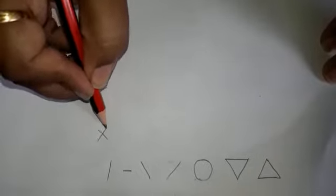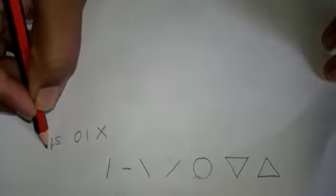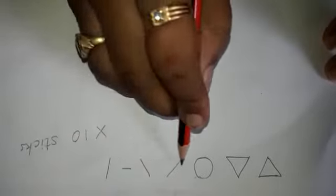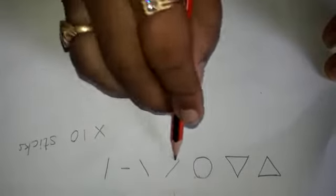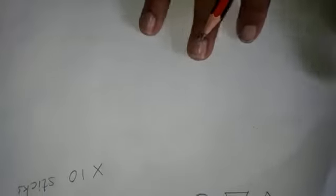By using these shapes, now we are going to draw the Warli art. Shall we start? Before starting this, I want to say you a formula which is very easy to draw this art. That is XIO sticks. Sticks means nothing but slanting lines. Okay.